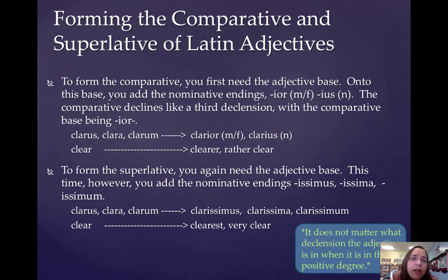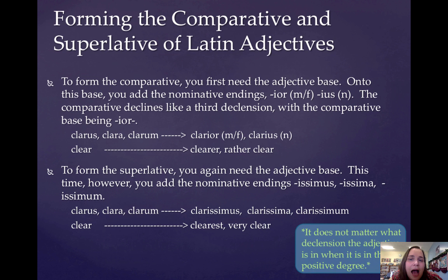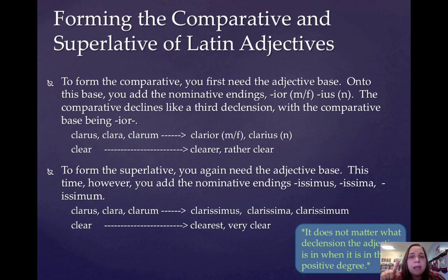So how do we form the comparative and the superlative for Latin adjectives? To form the comparative, you need to get the adjective base. Onto this base, you're going to add the nominative endings: IOR for the masculine or feminine, or IUS for the neuter. The comparative adjective declines like a third declension, with the comparative base being dash-IOR-dash. You'll see a declension of this in a couple of slides.